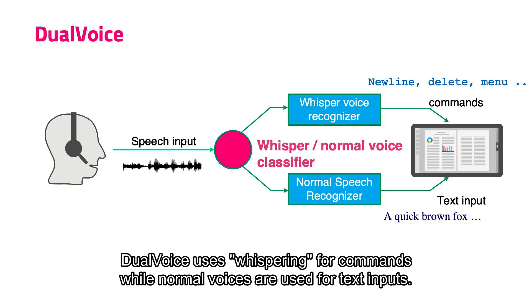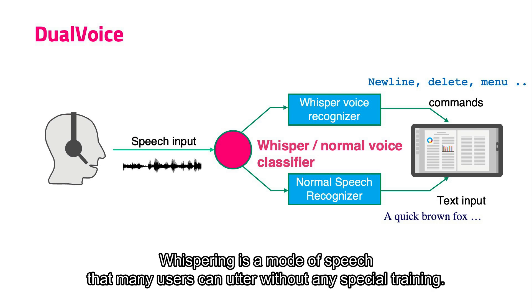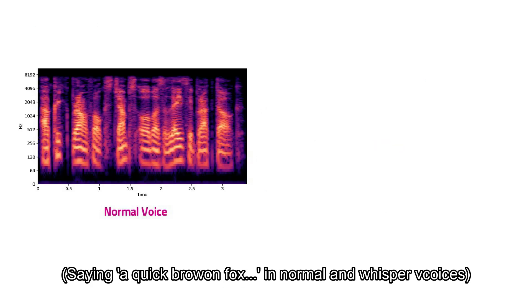Dual voice uses whispering for commands while normal voice is used for text input. Whispering is a mode of speech that many users can utter without any special training. [Demo] DoubleQuote... And what is the use of a book? Comma. DoubleQuote. A quick brown fox jumps over the lazy black dog.